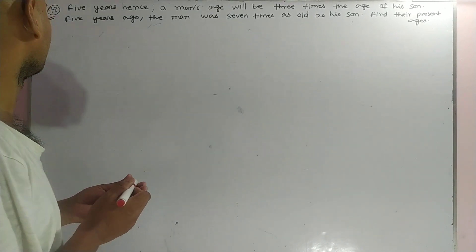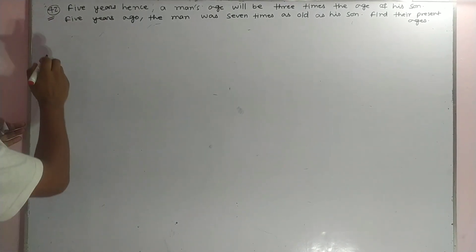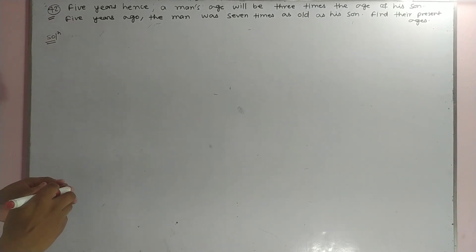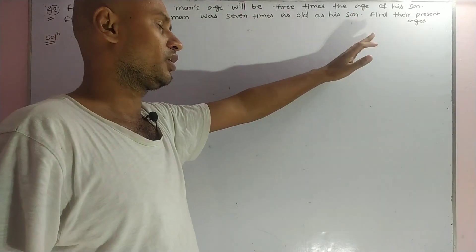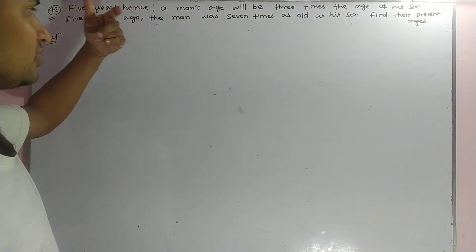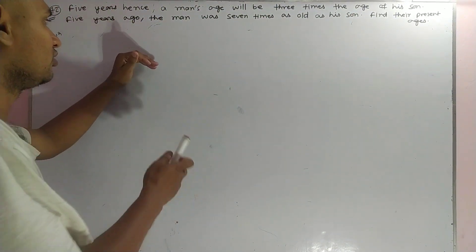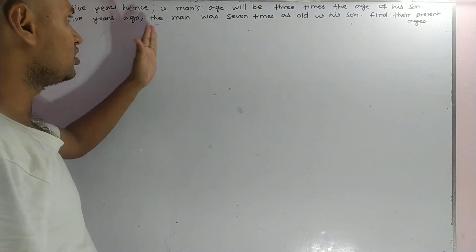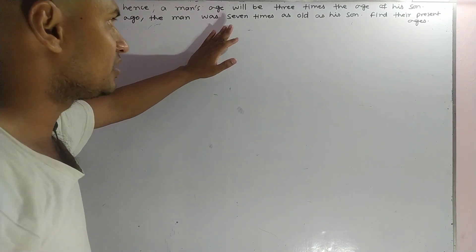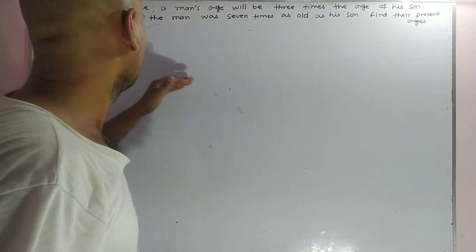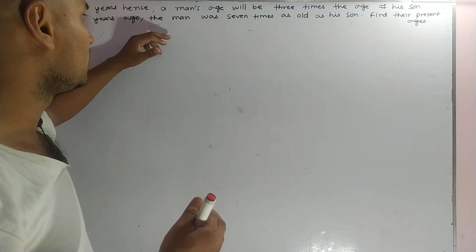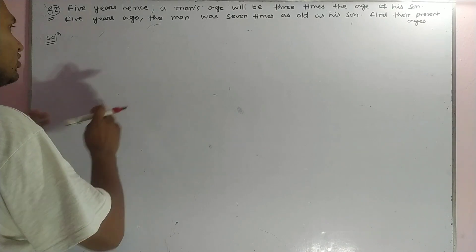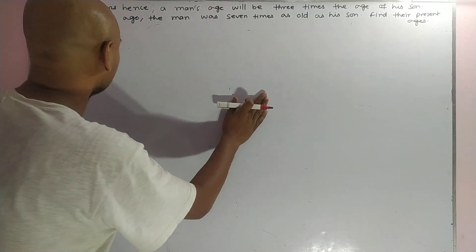Good morning students. Today we have to discuss question number 42. Five years since — meaning five years later or five years after — a man's age will be three times the age of his son. Five years ago, the man's age was seven times the age of his son. Find their present ages. First of all, you have to assume the present age of the son and the man.